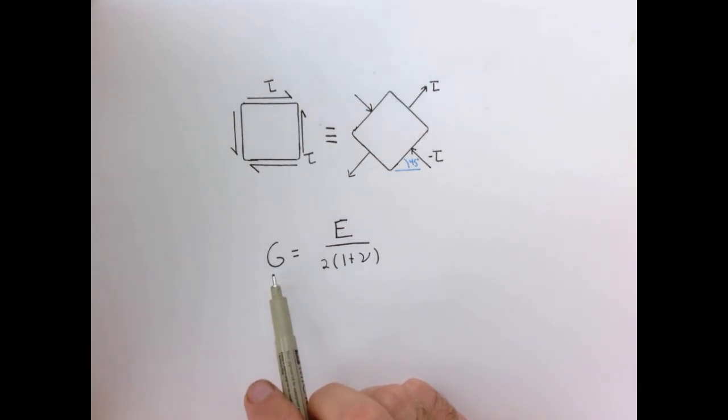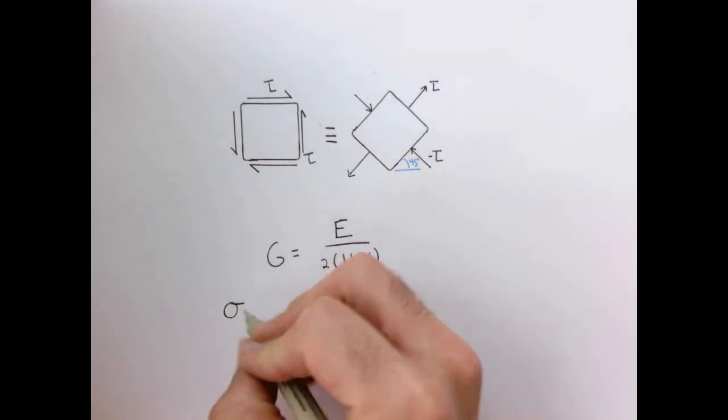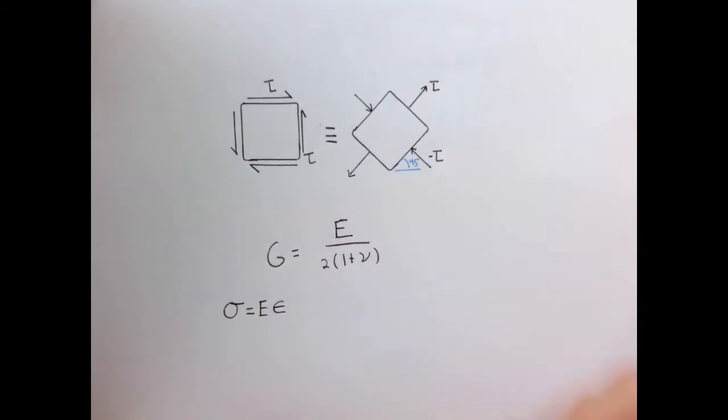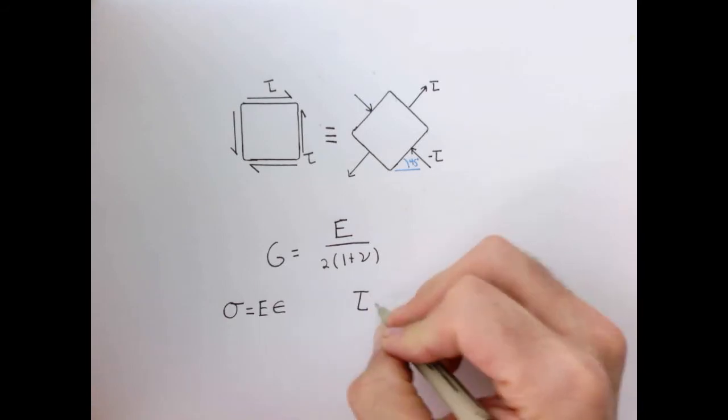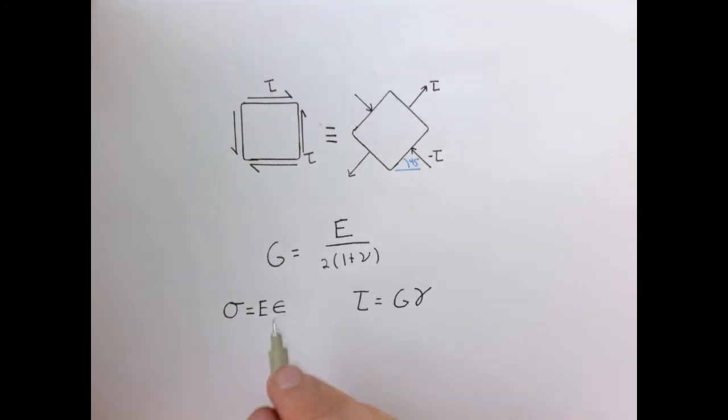G is related to E, which is the elastic modulus and Poisson's ratio. If you remember in our linear elastic model, we say that the normal stress is equal to E times the normal strain, and we said that shear stress is equal to G times the shear angle. So we're going to use geometry and the equivalence of these two situations that we've already shown to prove this relationship, and that there's only two parameters in our linear elastic model: the elastic modulus and Poisson's ratio.